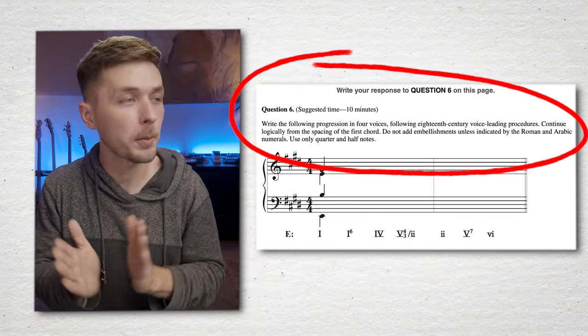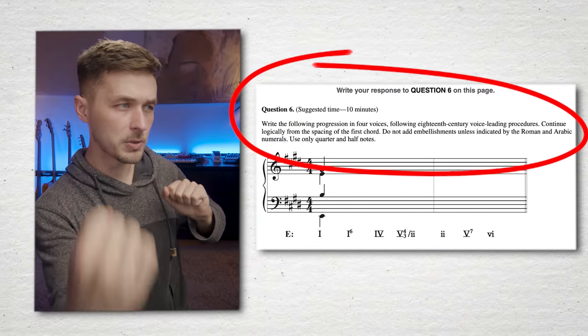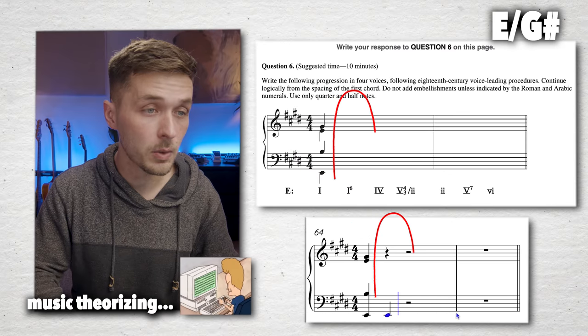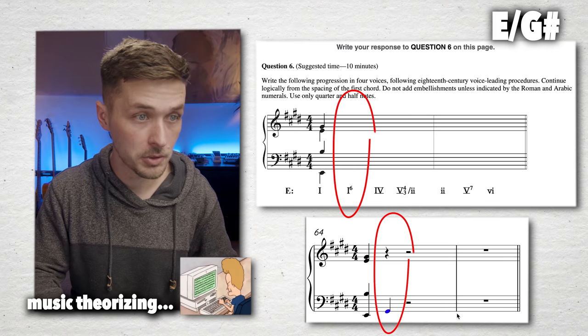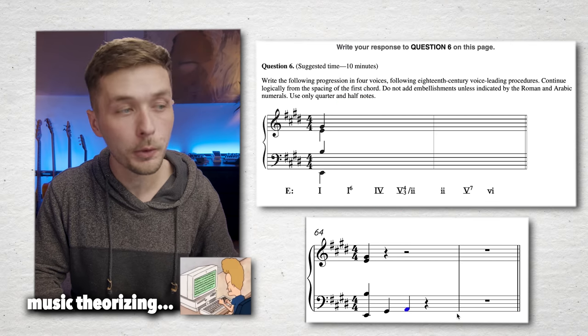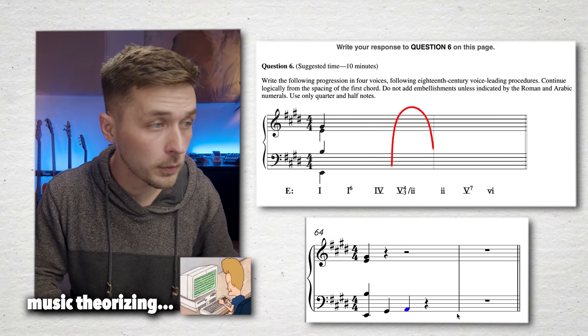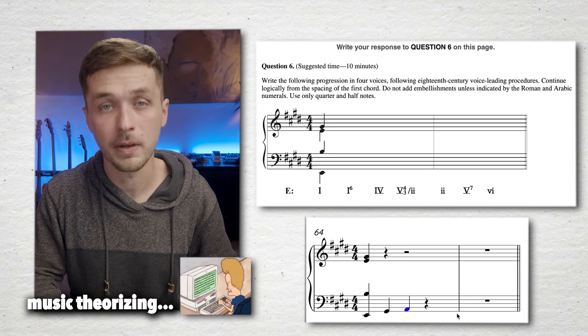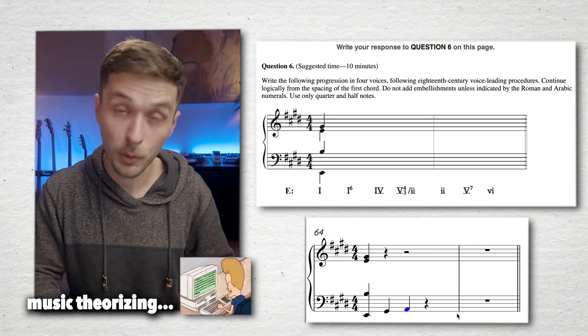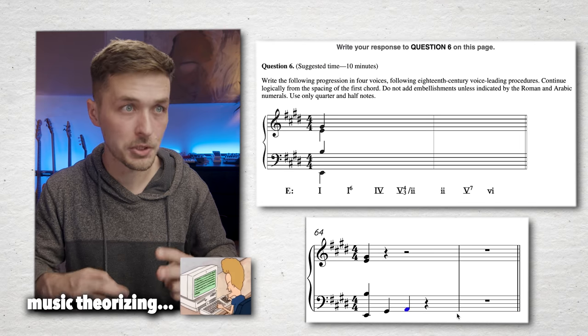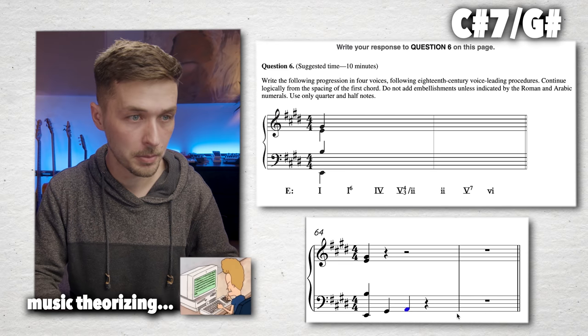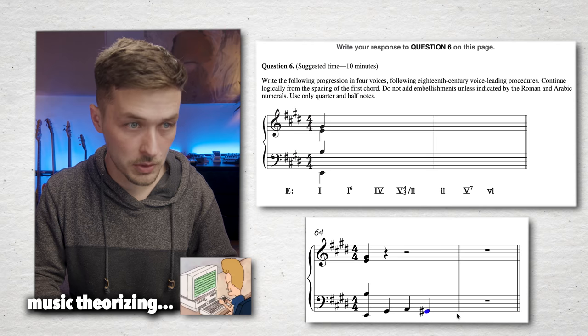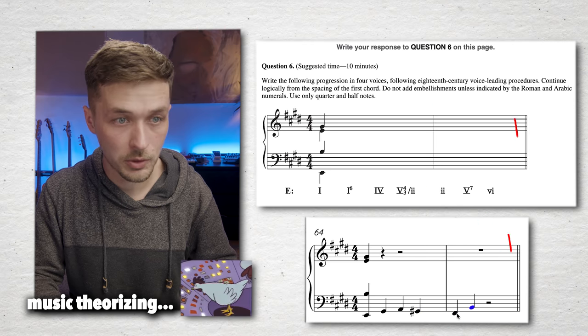Okay. Next question. Write the following progression in four voices following 18th century voice leading procedures. Continue logically. We got to use logic here, guys. Okay. So we start on a one chord. Then we go to a one six chord, which means E over G sharp. One chord in first inversion. Going to a four chord. Going to a four, four, three of... I'll try it again. Going to a five, four, three of two. In the key of E, the two chord is F sharp minor. The five of F sharp minor is C sharp seven. And a four, three chord, I believe, is in second inversion. So that's a C sharp seven over G sharp. Great. Going to a two chord. Going to a five chord. Going to a one. Two, five, one. Gotta love it.